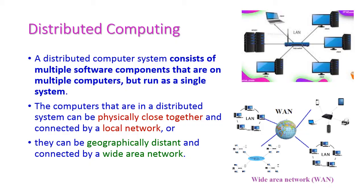The next type is distributed computing. A distributed computing system consists of multiple software components running on multiple computers, where each computer has its own software but everything runs as a single system. The computers in a distributed system can be physically close together and connected by a local area network (LAN), or geographically distant and connected by a wide area network (WAN).